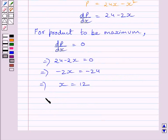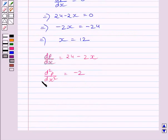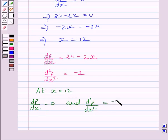We know dp/dx = 24 - 2x. Differentiating both sides with respect to x, we get d²p/dx² = -2. Clearly we can see, at x = 12, dp/dx = 0 and d²p/dx² = -2.